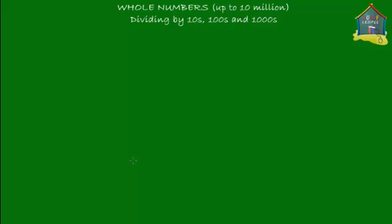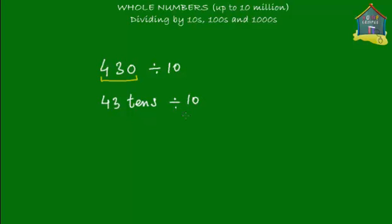Let me give you the number 430 and let's say that we want to divide this by 10. The given number is 430 — and let's think about what 430 means. Well, 430 is 43 tens. Now, 43 tens is to be divided by 10. You have 43 tens and you want to divide it by 10 — this is as good as asking how many tens 430 can be divided into. And the answer to that is 43.